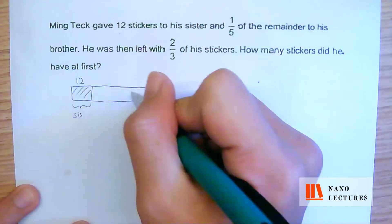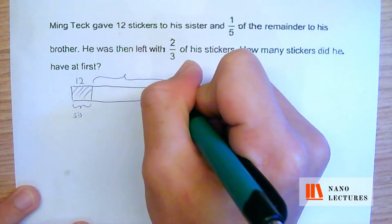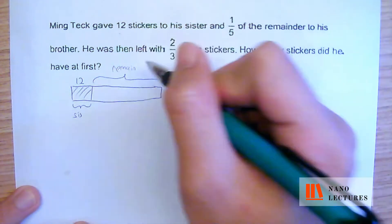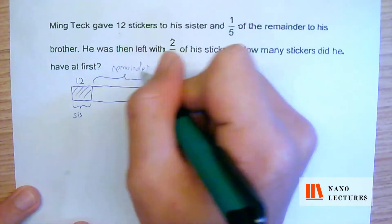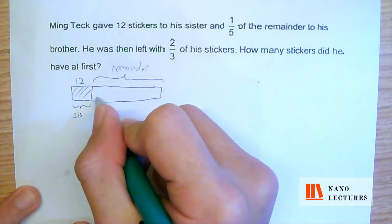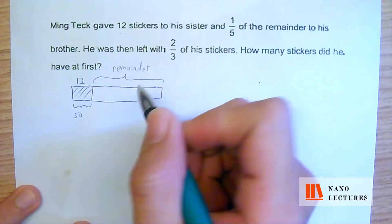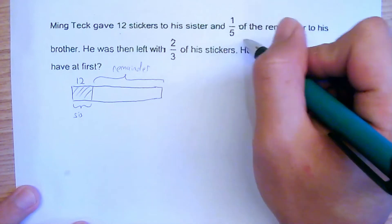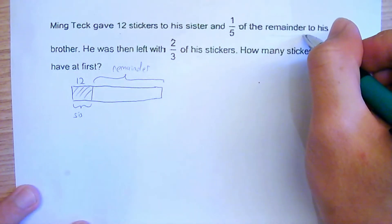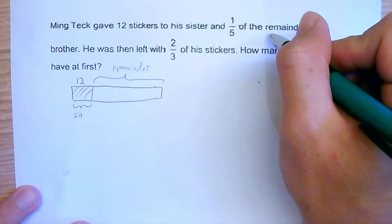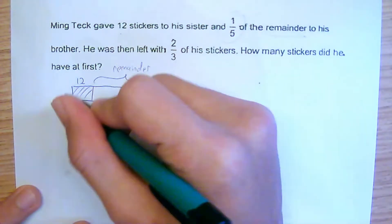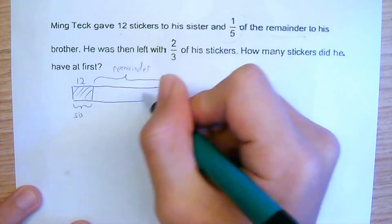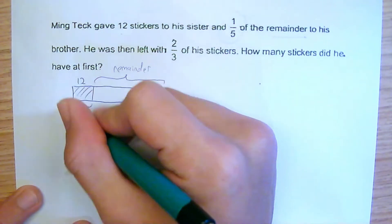Then one-fifth of the remainder — so what is this? This is the remainder. If you're a parent watching this, always jot down all the information as much as possible to let your child know that this is the remainder. It's because the sentence clearly states one-fifth of the remainder, yet a lot of students will take one-fifth of everything instead of one-fifth of the remainder. Which is why I put it very clearly: this is the remainder, this is the entire thing.